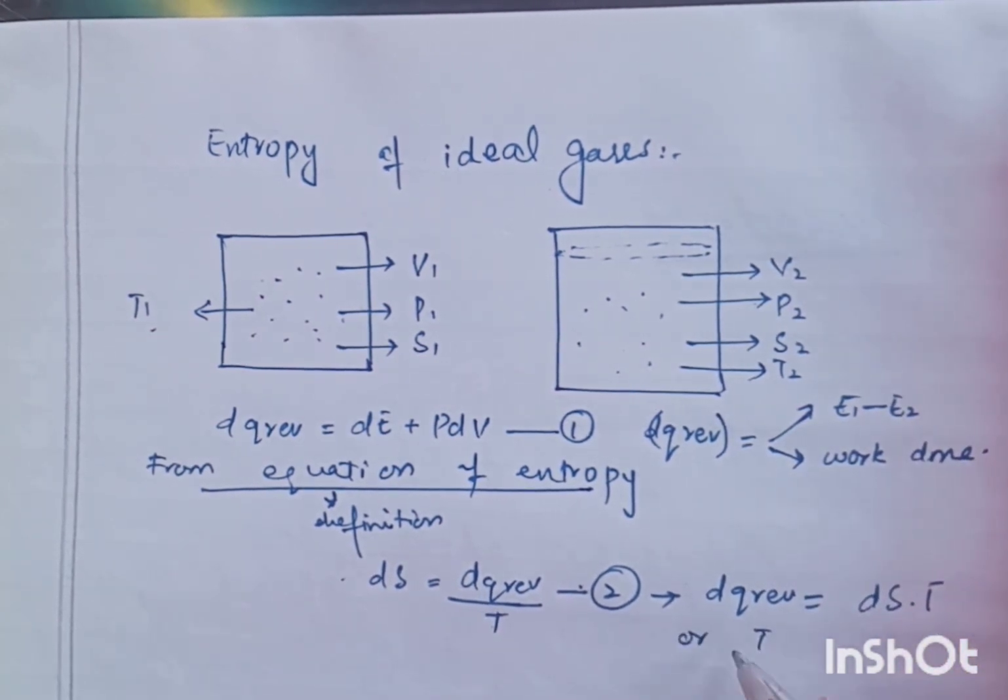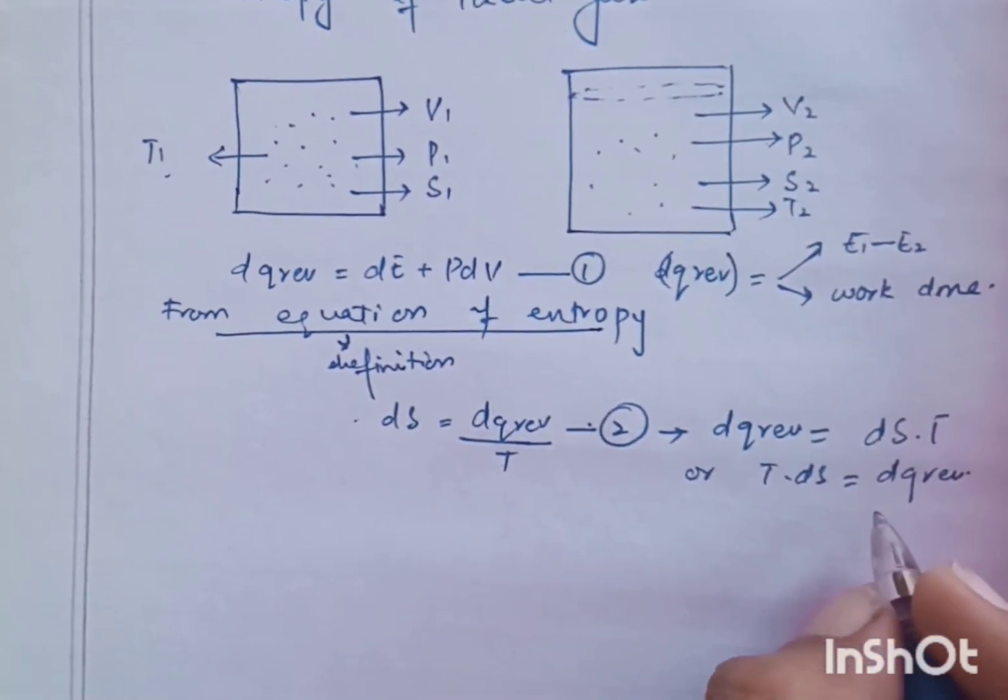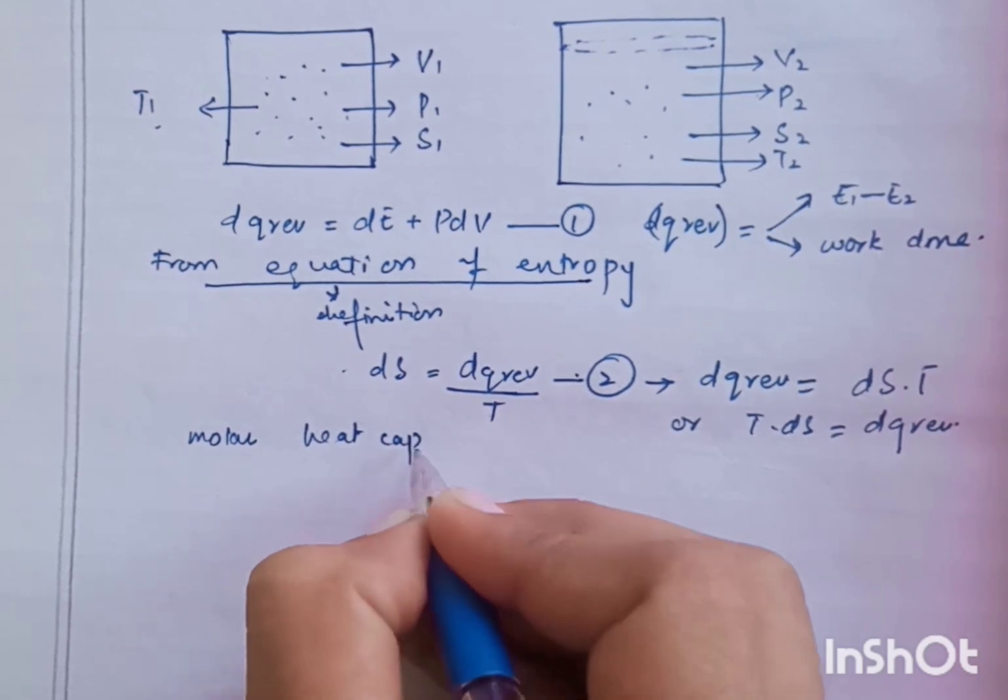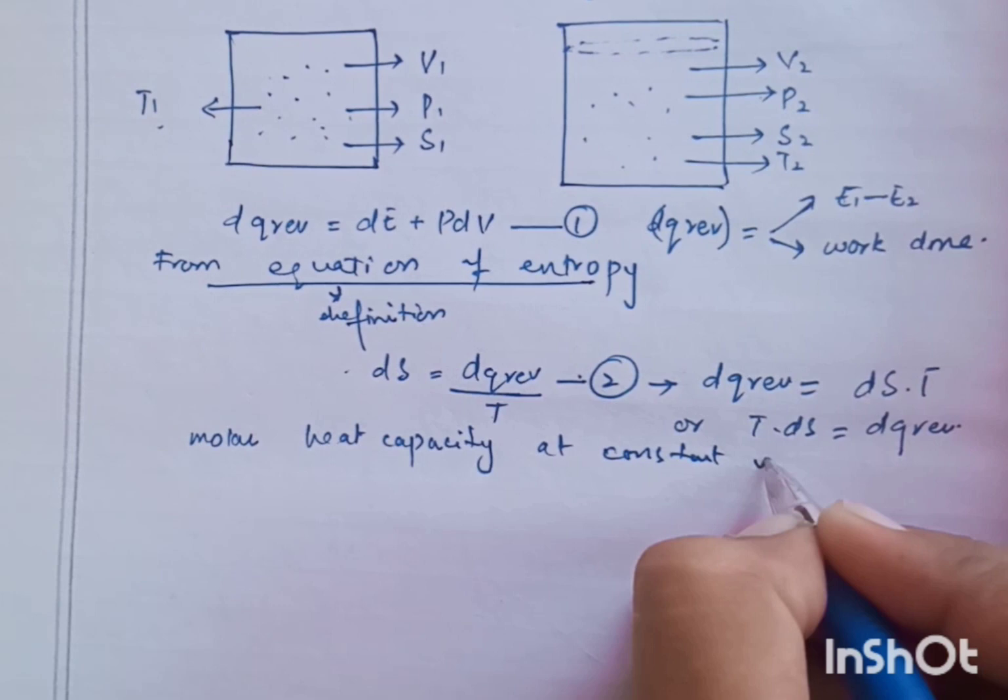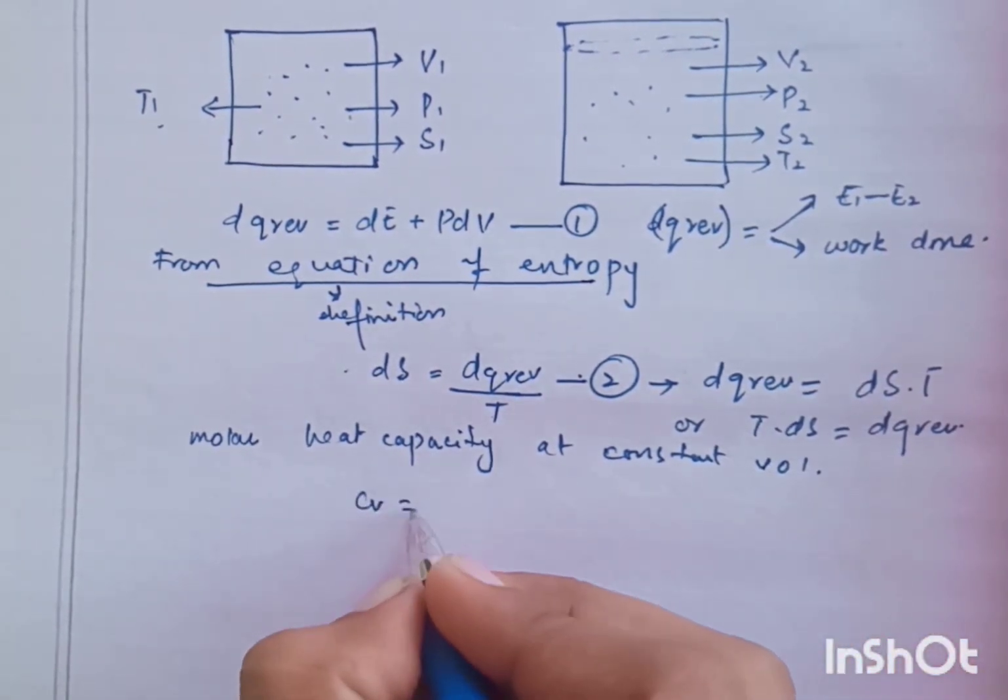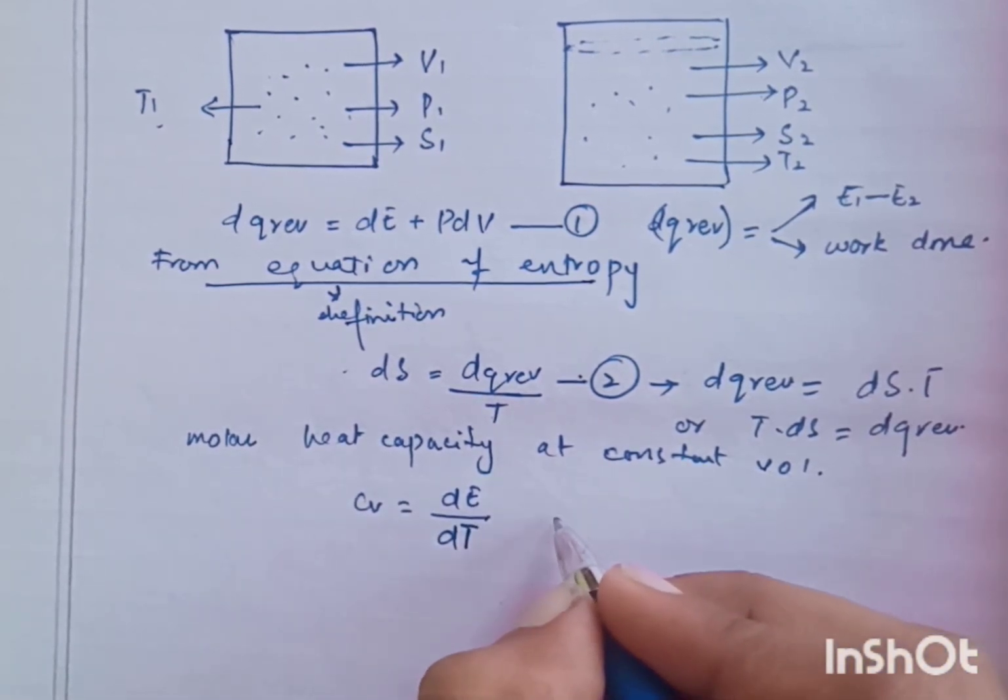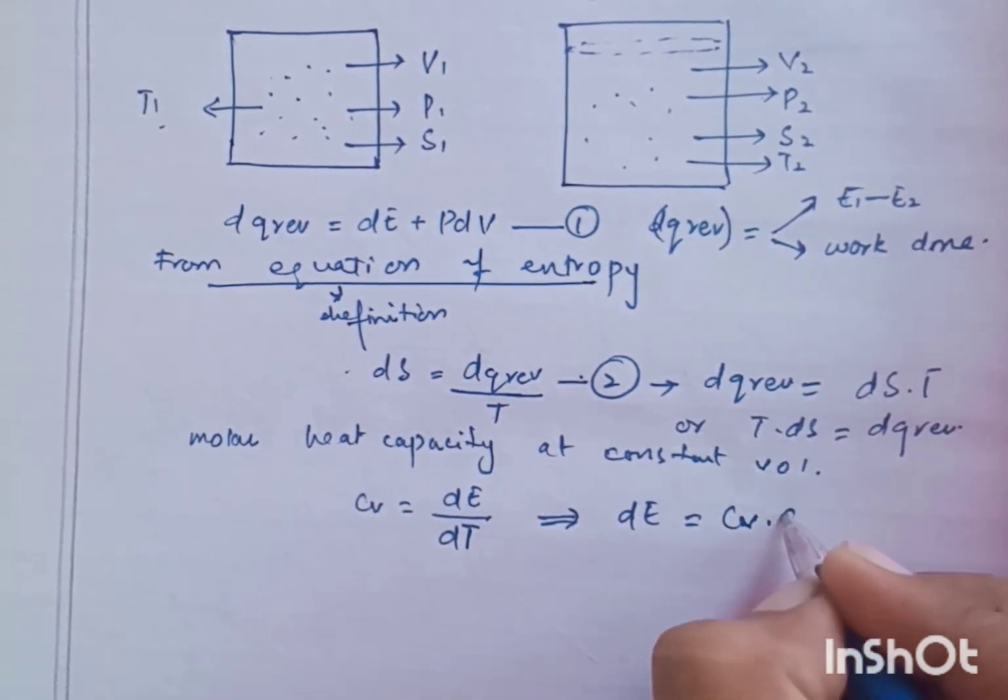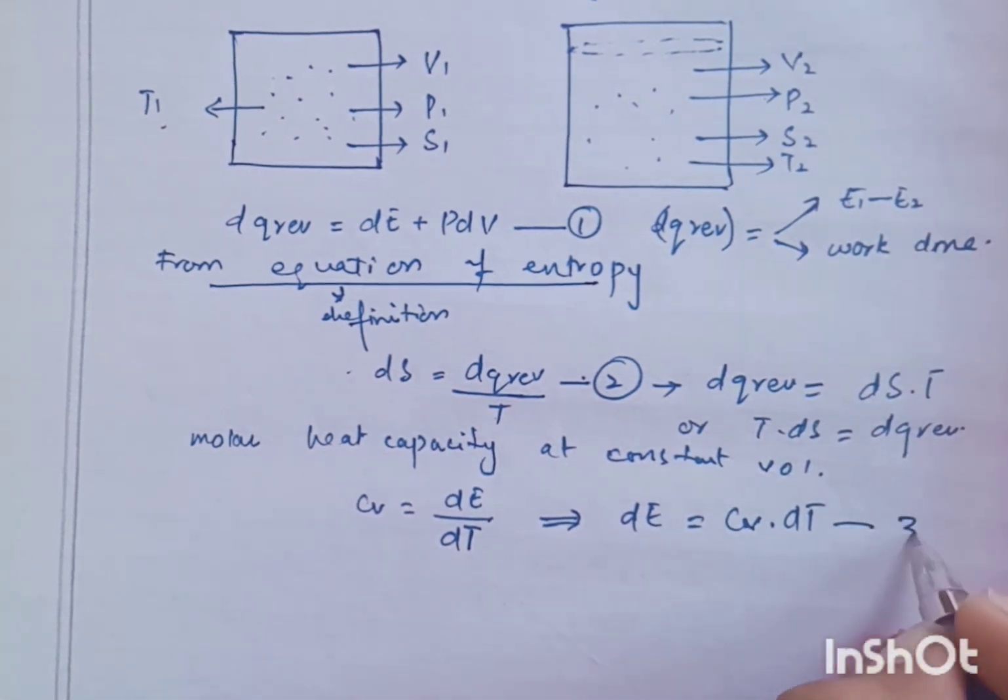Now we know that molar heat capacity at constant volume is equals to CV equals to DE over DT. Now, DE equals to CV into DT. DT is brought to the left side. Then this is equation number 3.